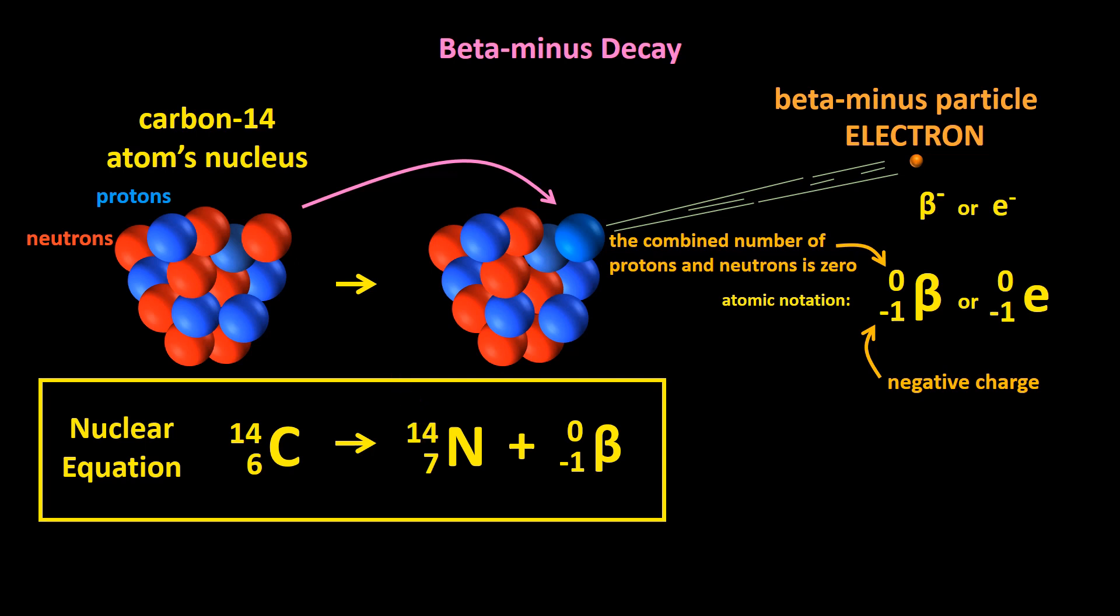The carbon-14 atom has turned into a nitrogen-14 atom, and a beta minus particle has been emitted. That's the nuclear equation for the beta minus decay of carbon-14. Notice that 6 equals 7 plus minus 1, and that 14 equals 14 plus 0.